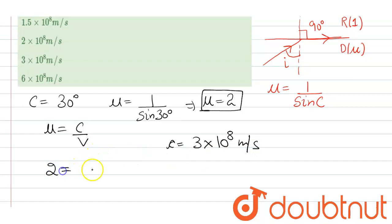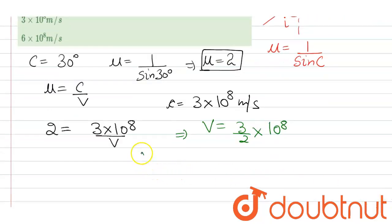Put mu equals to 2, c is 3 into 10 to the power 8 and we have to determine v. So v can be written as 3 upon 2 into 10 to the power 8. So 3 upon 2 is 1.5 that means v is equal to 1.5 into 10 to the power 8 meter per second. That is the answer of the given question.